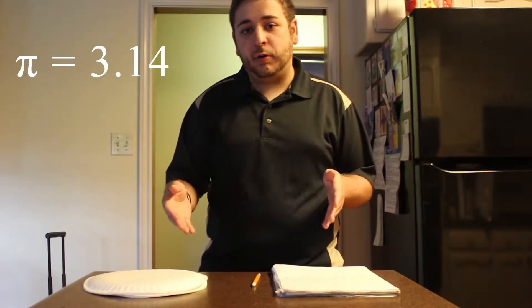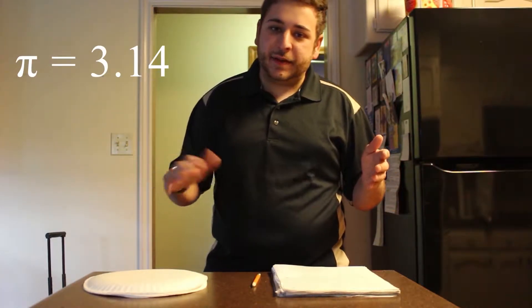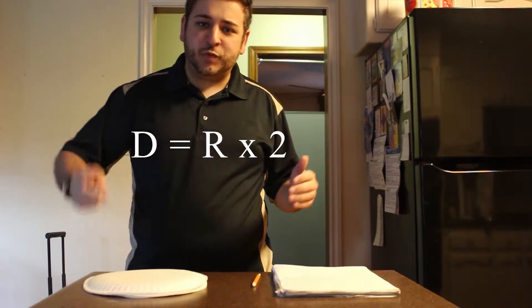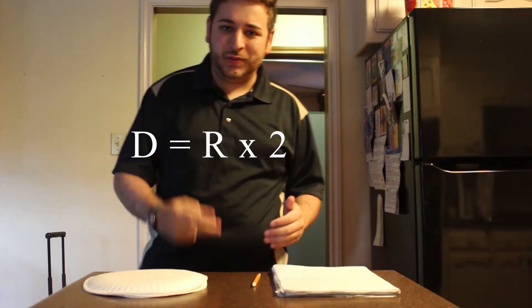In case you don't know what pi is, we're just going to use 3.14, since that's about the same amount. And diameter is just radius times 2.